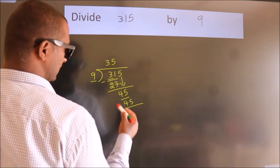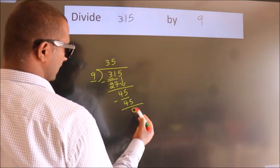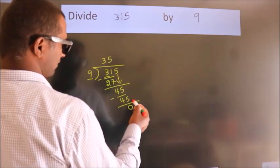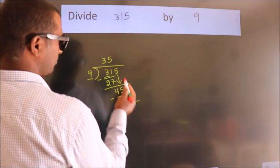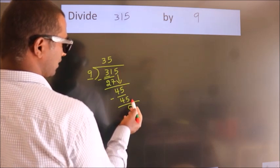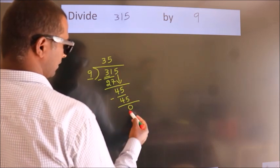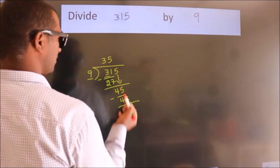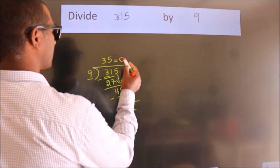Now, we subtract. We get 0. After this, no more numbers to bring it down. And we got remainder 0. So, this is our quotient.